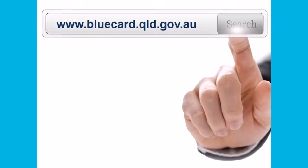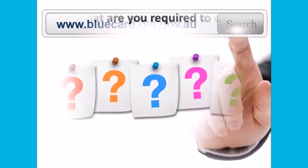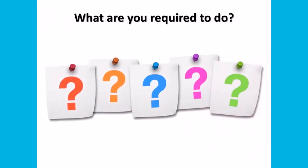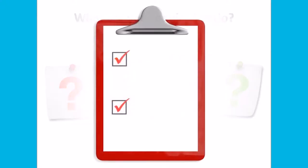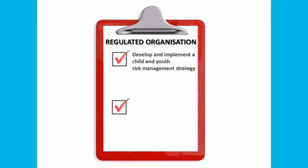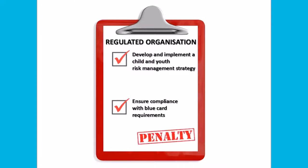If you are a regulated organisation, what are you required to do? If you have determined that your organisation is a regulated organisation, then by law your organisation must develop and implement a child and youth risk management strategy and ensure compliance with blue card requirements. It is important to understand that penalties apply in relation to failure to comply with requirements under the blue card system.